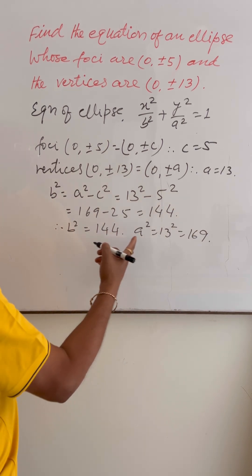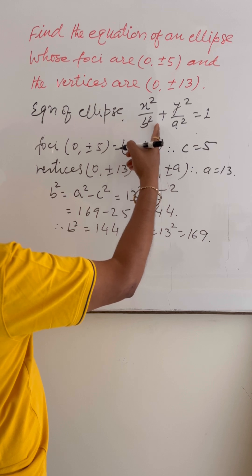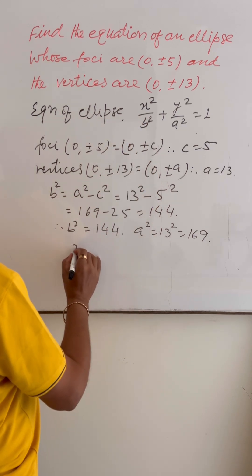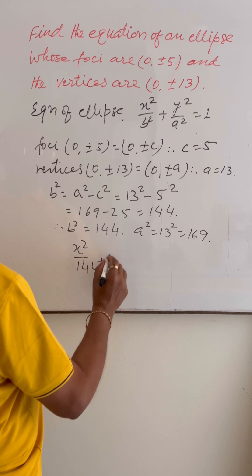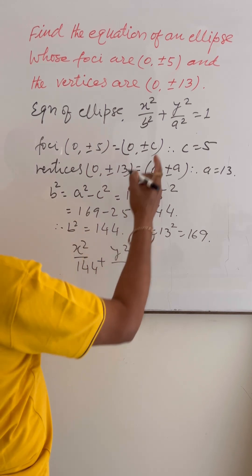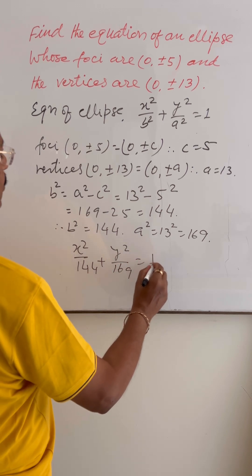By putting the values of a² and b² in this equation, we can get the result very easily. That is x² / 144 + y² / 169 = 1.